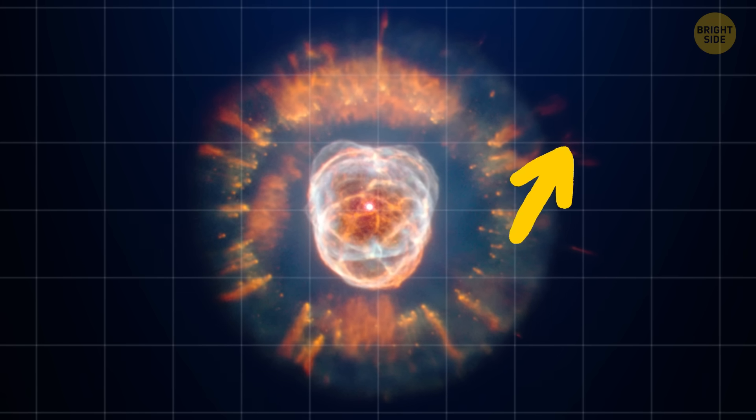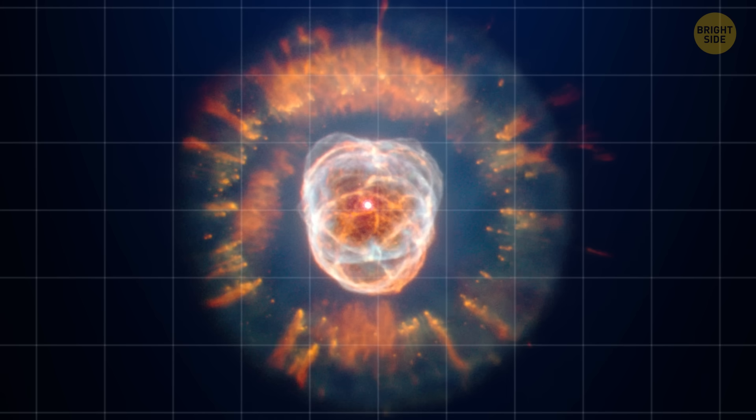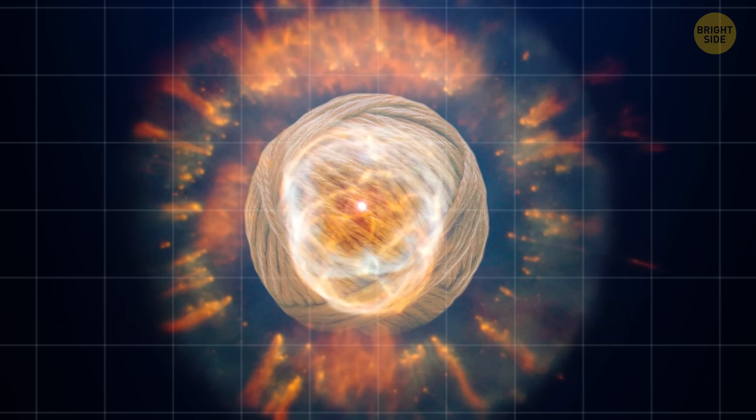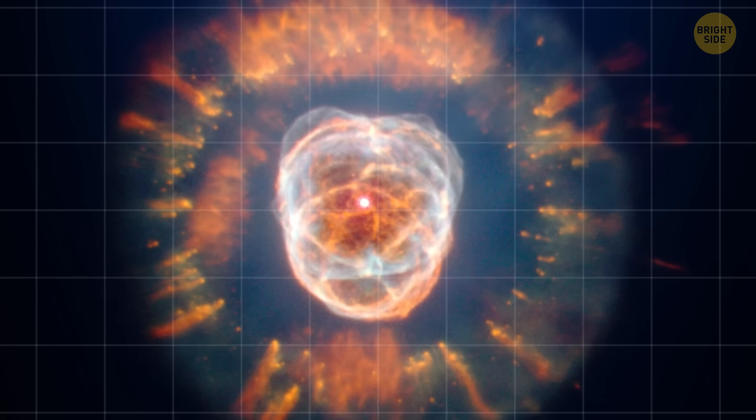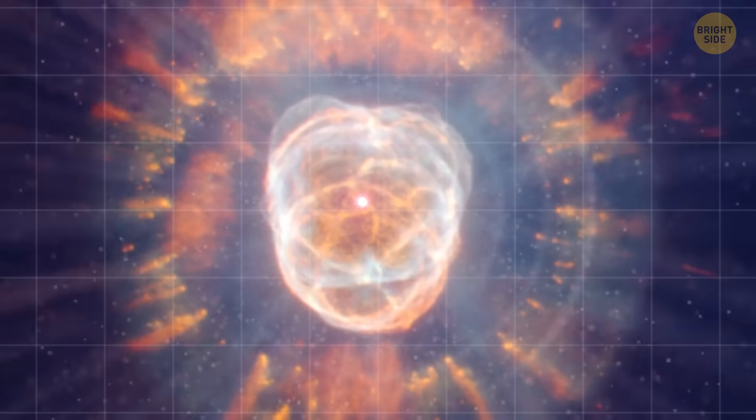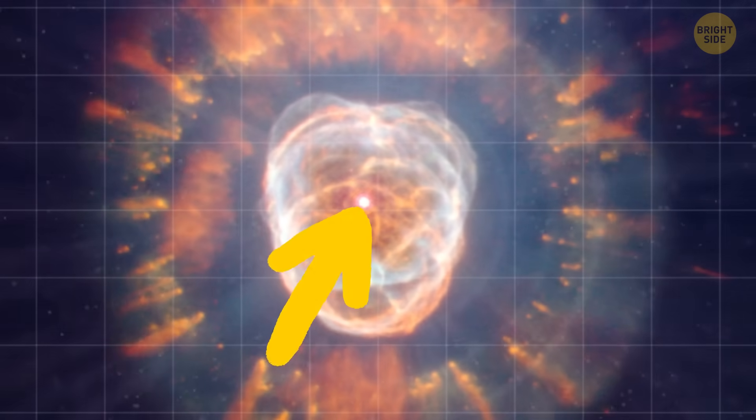The bizarre orange streaks in the outer part of the cloud stretch light-years away in all directions. The middle resembles a ball of twine, but in reality, it's a bubble of material blown into space by the wind of high-speed material produced by the central star.